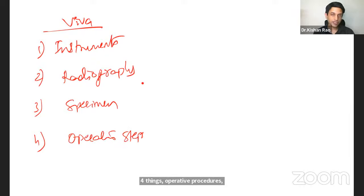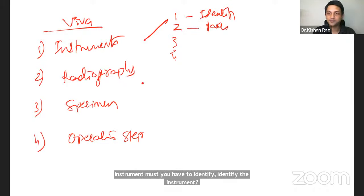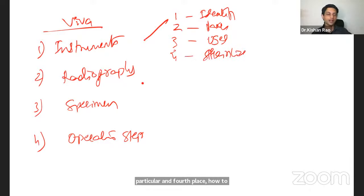For example, any instruments, you will answer under four headings. Any instrument. First, you have to identify, identify the instrument. Second thing. What are the parts of an instrument or the parts you should able to mention the parts. Third thing is, what are the uses for the uses of that particular? Then fourth one is how to sterilize, sterilize the instrument. These four. You need directly. And while identifying, I didn't even tell the full name of that instrument.